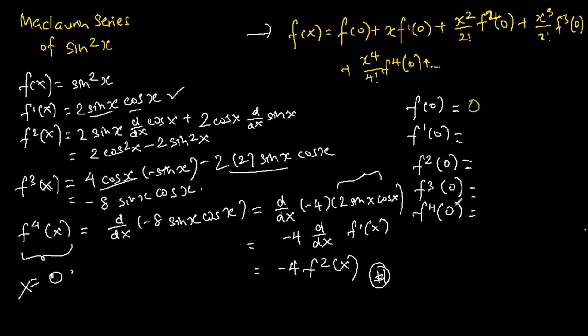f double prime of zero is two because 2 cosine squared zero is equal to 2 cosine zero, and we know that cosine zero is one. And for the second term, basically it contains sine x. Anything, any term that contains sine x is zero. f triple prime of zero, because it contains sine x, so it's zero.